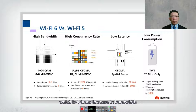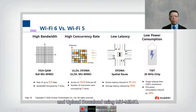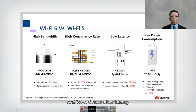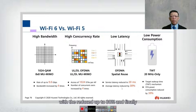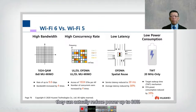Theoretically, Wi-Fi 6 can reach 9.6 gigabits per second — a four-times increase in bandwidth. It also has a high concurrency rate, supporting up to 1024 stations per AP (four times Wi-Fi 5) using upload/download OFDMA and MU-MIMO. Latency is reduced to 20 milliseconds — a 30% improvement. Wi-Fi 6 also supports low power consumption via Target Wake Time (TWT), reducing power by up to 30% during idle.